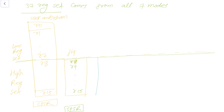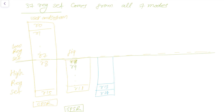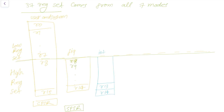The FIQ register bank runs from R8 to R14 — it does not have a separate R15 — plus SPSR. The interrupt request (IRQ) mode has only R13 and R14 as different registers, plus its own SPSR.